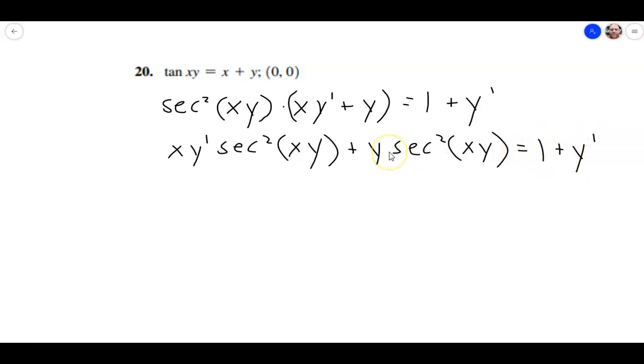And the next thing I want to do is I want to get all the terms with y prime over to one side, and then factor out a y prime. So this is going to be y prime, and we're going to have this term, so that's going to be x secant squared of xy, plus, and then we're going to bring this over to the other side as a minus y prime. So we'll just actually get a minus 1.